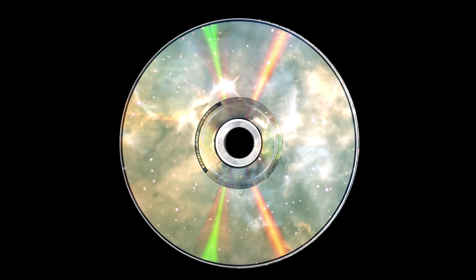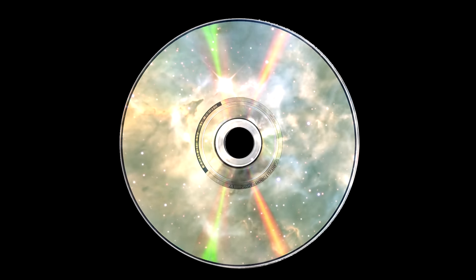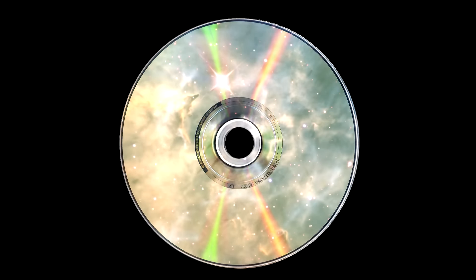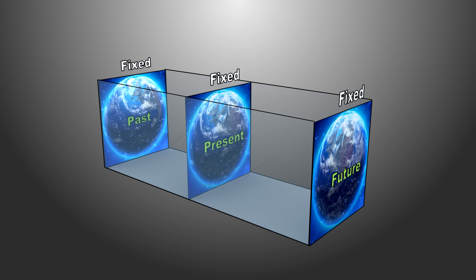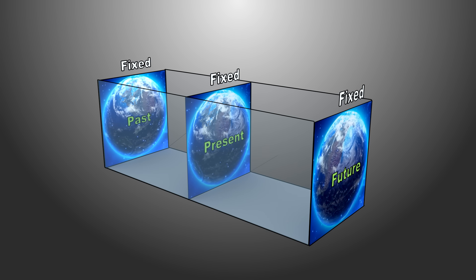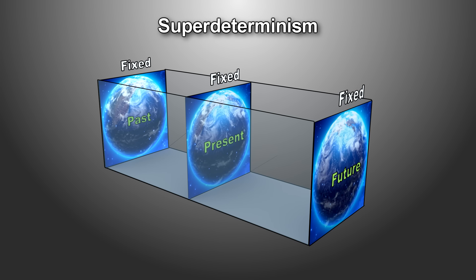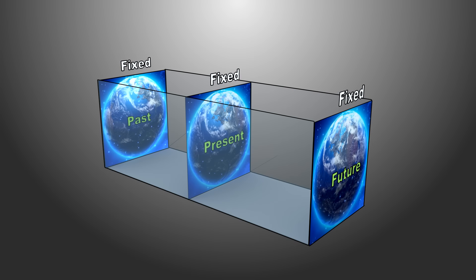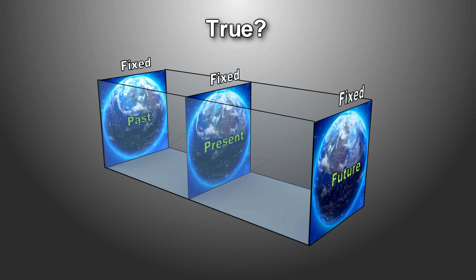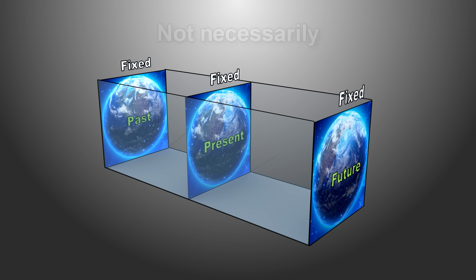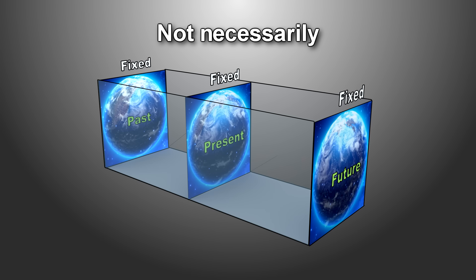If the universe is a DVD and all of time exists like points in space, then this implies that the future is as fixed as the past. This would imply no free will and super determinism. Do we have any additional evidence for this? Well, one solution to the mystery of entanglement is just such a universe with no free will. See my video on entanglement. So now we have possibly some evidence that seems to lead to the block universe scenario. This doesn't make it true, however. So the jury is still out on this.